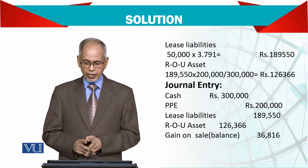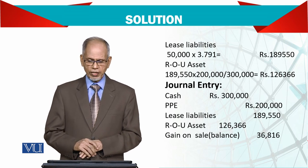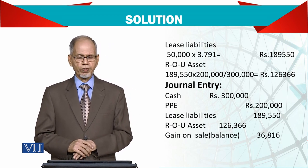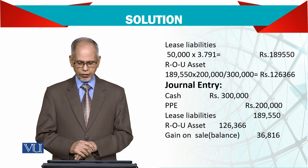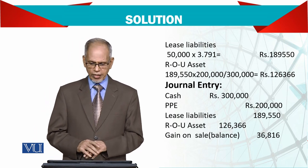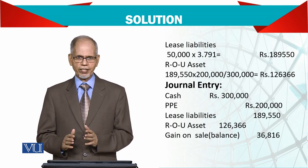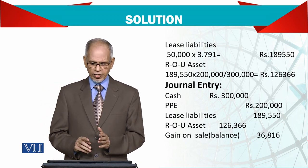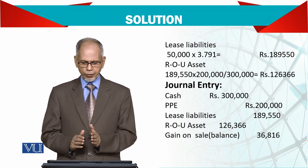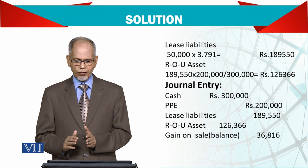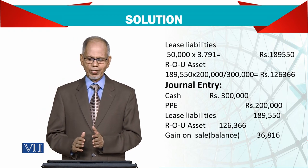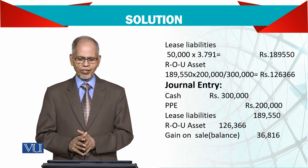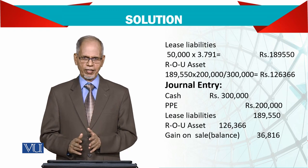The right of use asset recognized is 126,366. Balancing the journal entry, the credit side is more than the debit side, and the difference is 36,806 — that is your gain on sale. It is a balancing figure.